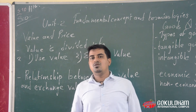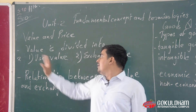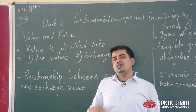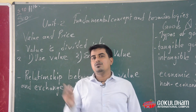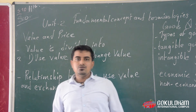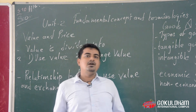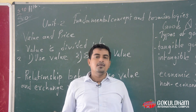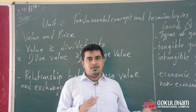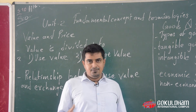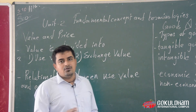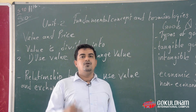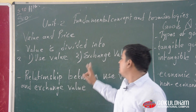In economics, value is divided into two parts: use value and exchange value. Use value generally refers to the usefulness of a commodity. For example, sunlight and air are some useful things which are utilized by human beings. These are things which are found in abundance and are used by human beings.